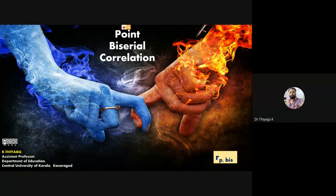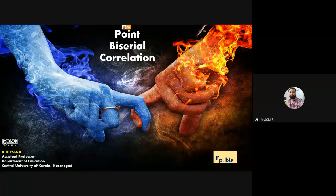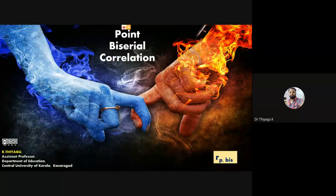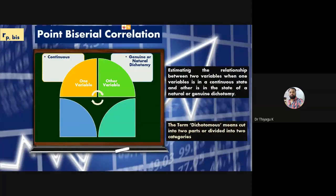Now I move to the point-biserial correlations. There's a small difference between the point-biserial and the biserial. In the biserial, we have two variables — one continuous and the other is called artificial dichotomy. But in the point-biserial, we need the same kind of two variables, but continuous, same as in the biserial. However, in the point-biserial, the second variable should be a natural dichotomy. Natural dichotomy means it naturally divides into two categories only — there is no continuum. That's called a natural dichotomy.